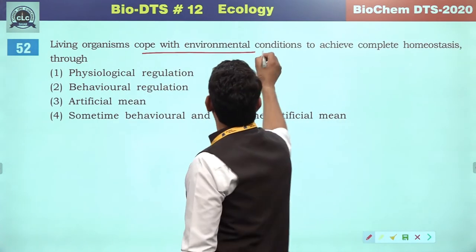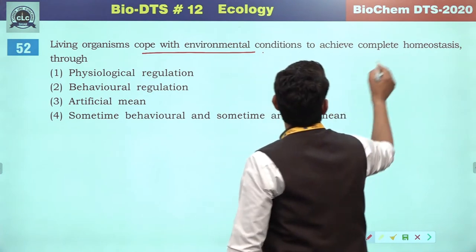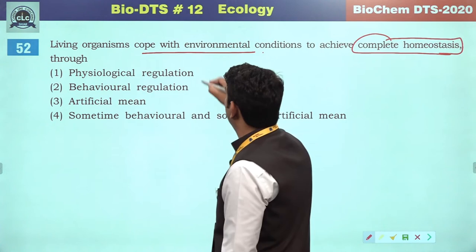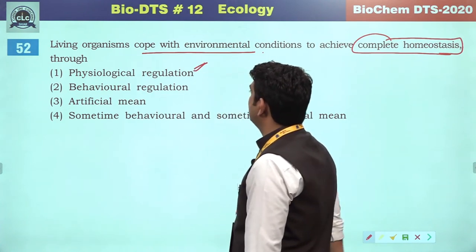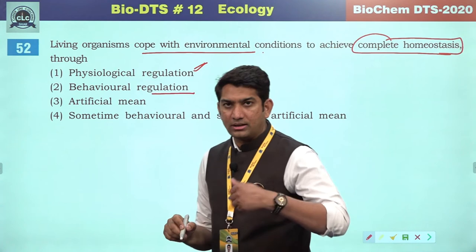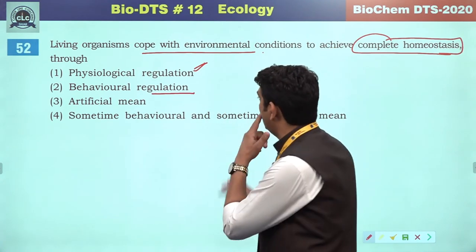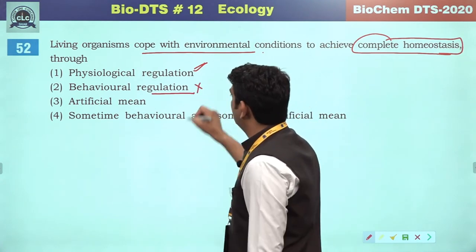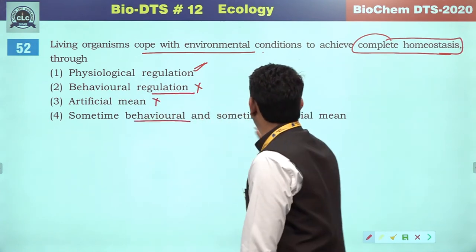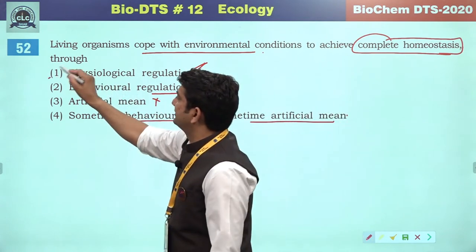Living organisms cope with environmental conditions to achieve complete homeostasis. Homeostatic regulators can use physiological regulation. Behavioral regulation can approach homeostatic conditions but cannot establish complete homeostasis. Through artificial means, complete homeostasis can be done. Sometimes behavioral, sometimes artificial — so the correct answer will be the first option.